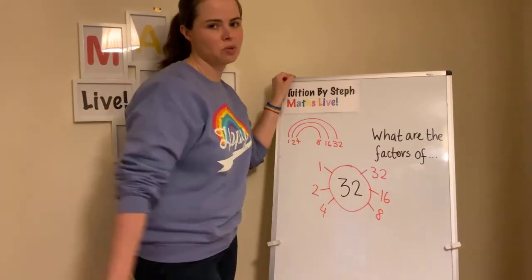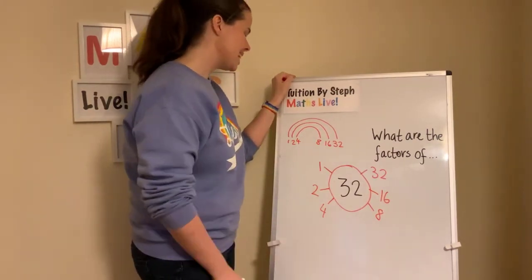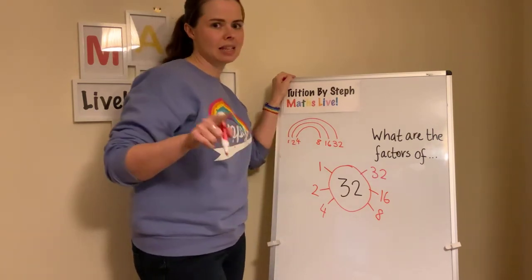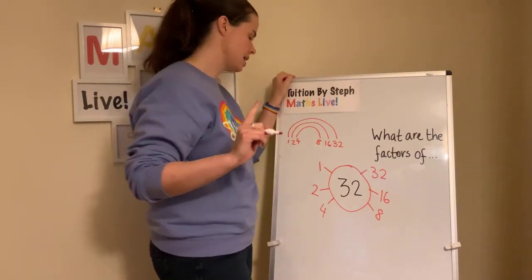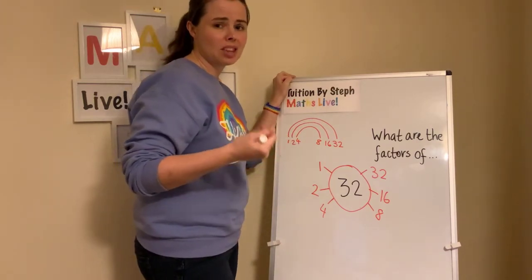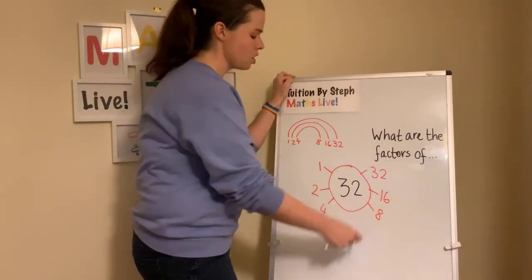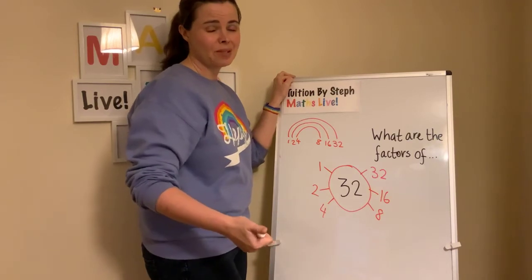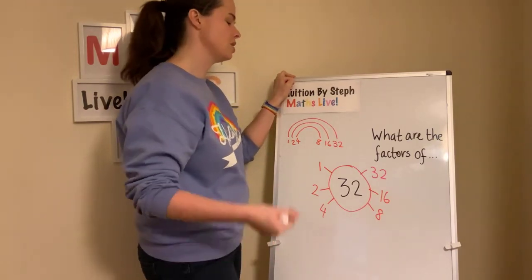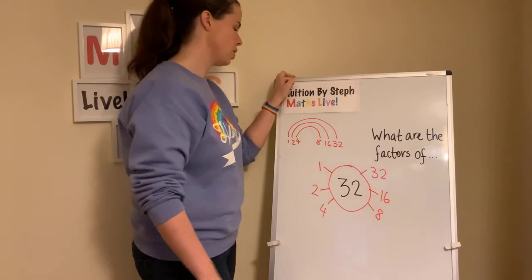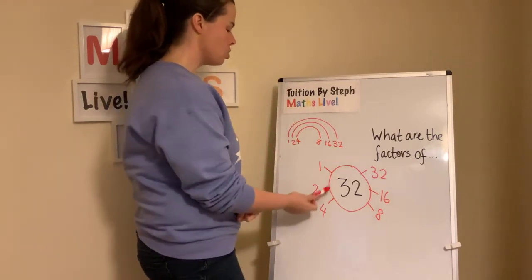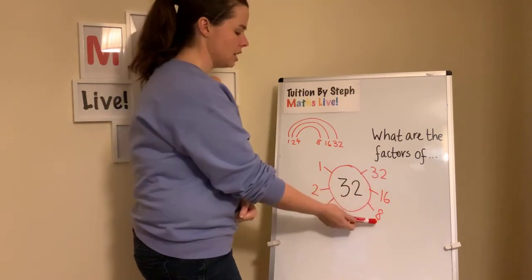Is it in the fives? No, it doesn't end in a 5 or a 0. Is it in the sixes? No, because 6 to 30, 6 to 36. Is it in the sevens? 7, 14, 21, 28, 35 — no. We've already got the eights. The nines: 1×9 is 9, 2×9 is 18, 3×9 is 27, 4×9 is 36. So the factors of 32 are 1, 2, 4, 8, 16, and 32.